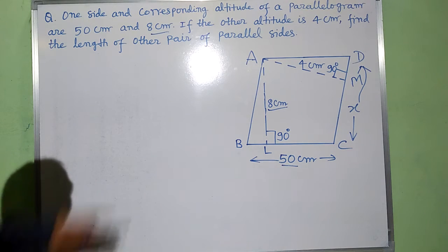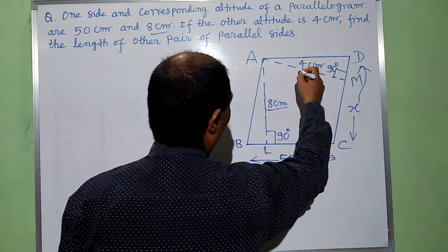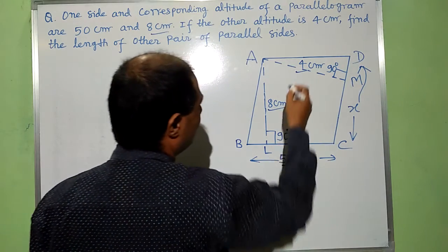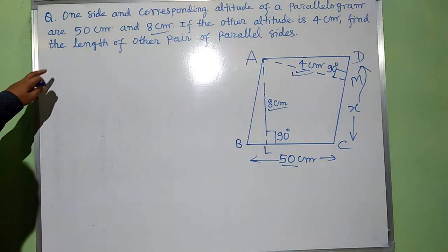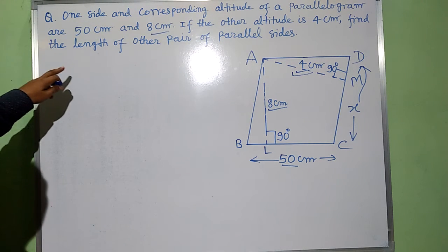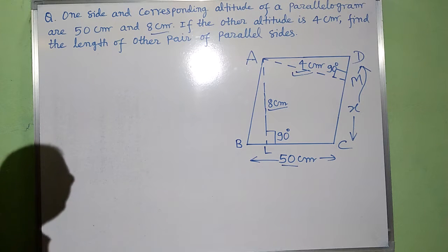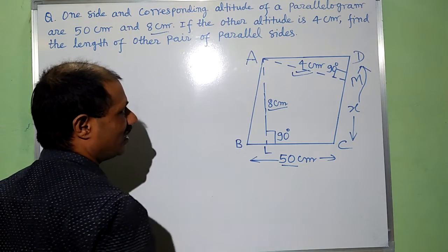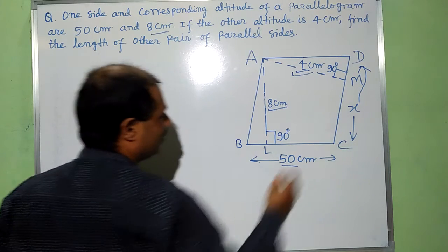In the other case, if the other altitude is 4 cm, suppose this is AM, this is altitude, its length is 4 cm. Then find the length of other pair of parallel sides. We have to find the length of AB, which is parallel and equal to CD.